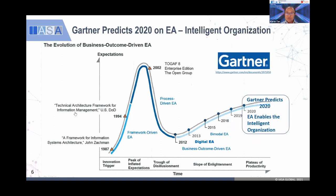And of course the next one is in 2020. Gartner made a prediction that if you have the EA team fully functioning, your organization can be turned into an intelligent organization. What does intelligent mean? Intelligent means if someone tells me I'm intelligent, I know many things — you can ask me any topic about life, social things, politics, products. They call it intelligent.